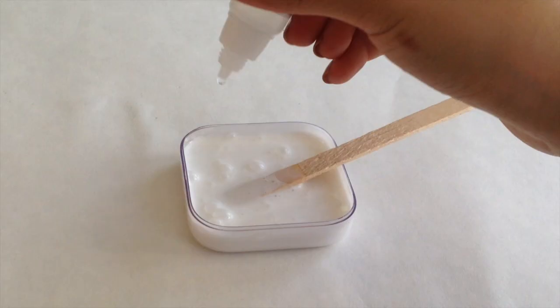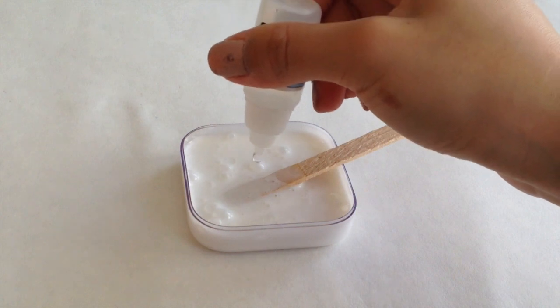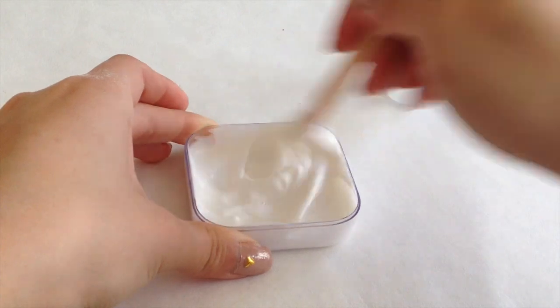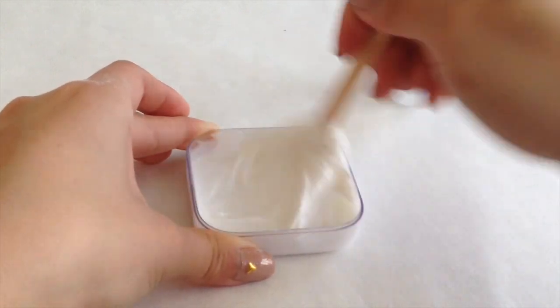Now you can add in your eye drops and that is what's going to turn your mixture into a slime. So just mix that together and you can see that it will start firming up.